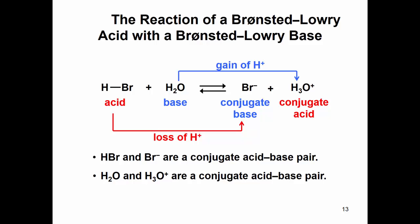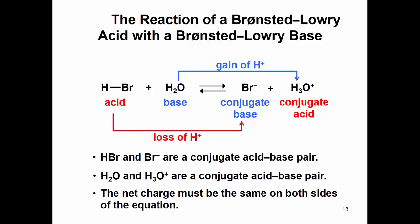Here we have actual chemicals: water and HBr. HBr is an acid, therefore water has to be a base. Water can act as an acid or a base, but it acts as a base here because HBr is an acid. When HBr loses that proton, those electrons go onto the bromine, and it goes from being an acid to being a conjugate base. The water gains a proton — bases accept protons — so it becomes the conjugate acid. HBr and bromide are a conjugate acid-base pair, and water and hydronium H3O+ are a conjugate acid-base pair.